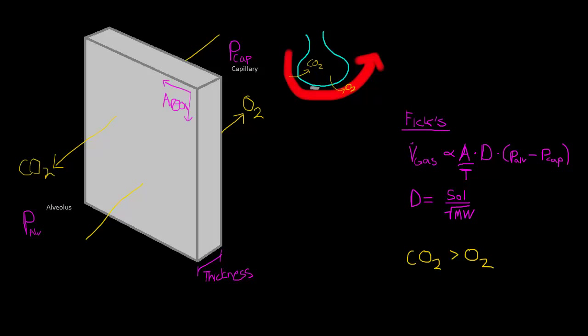And then, finally, if we change the partial pressure, the difference in partial pressures across the blood gas barrier, let's say we increase the partial pressure difference, we would see diffusion go up in this situation.